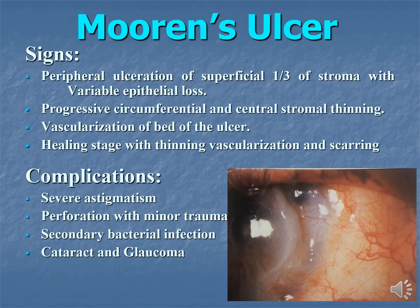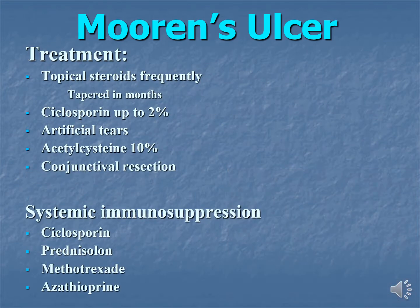Complications of this ulcer include severe astigmatism; it may lead to perforation after minor trauma, secondary bacterial infection may be dreadful, and cataract and glaucoma are other complications. As far as treatment is concerned, we use topical steroids frequently initially, then taper over months. We may use topical immunosuppressive drops like cyclosporine up to 2%, artificial tears, and acetylcysteine mucolytic agents up to 10%. Conjunctival resection may be helpful around the lesion.